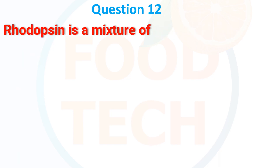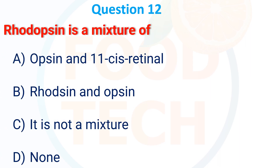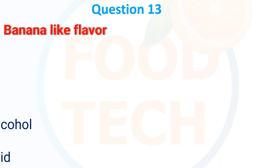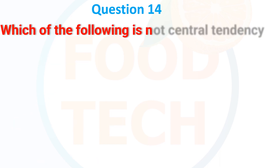Rhodopsin is a mixture of: A) opsin and 11-cis retinal, B) rhodosine and opsin, C) it is not a mixture, D) none. The answer is A. Banana-like flavor is due to: A) malic acid, B) nonane, C) isoamyl alcohol, D) tetric acid. The answer is isoamyl alcohol.